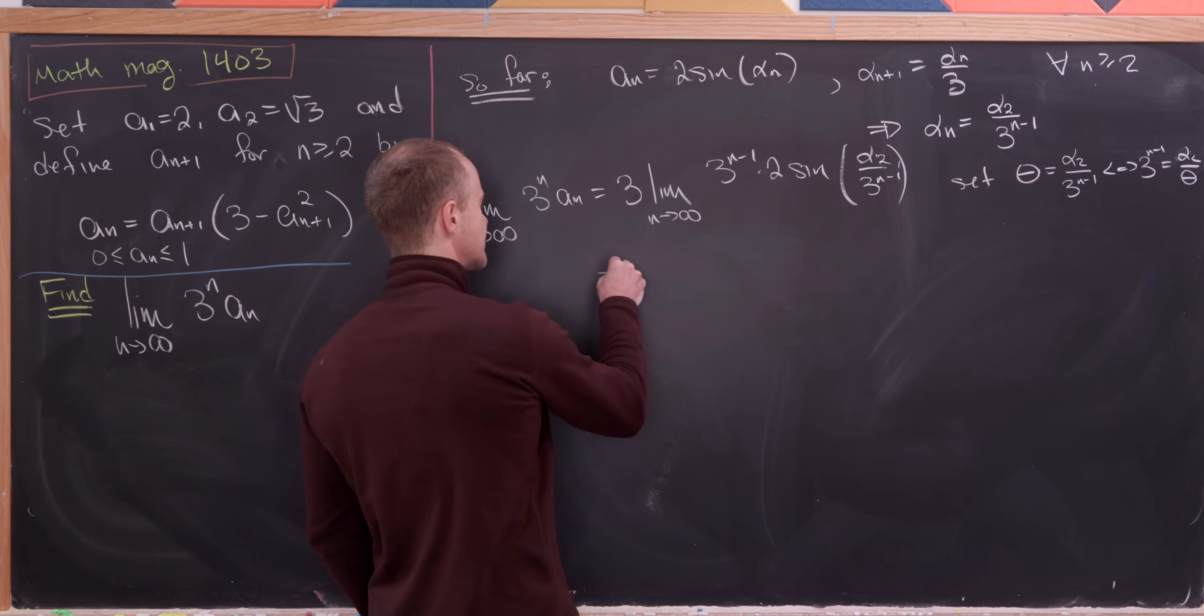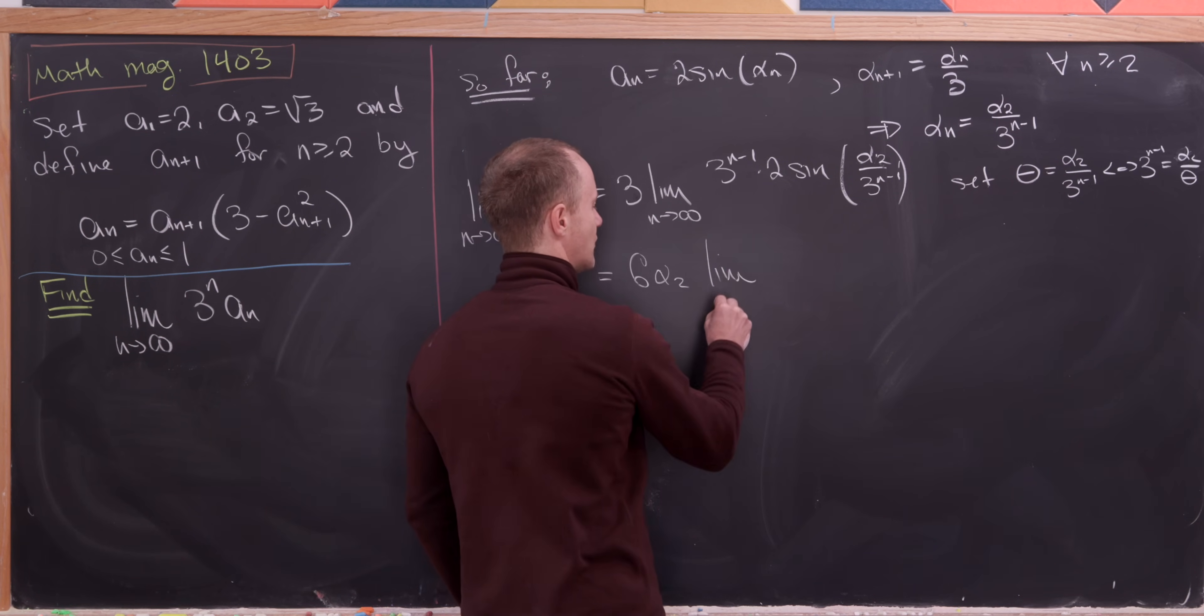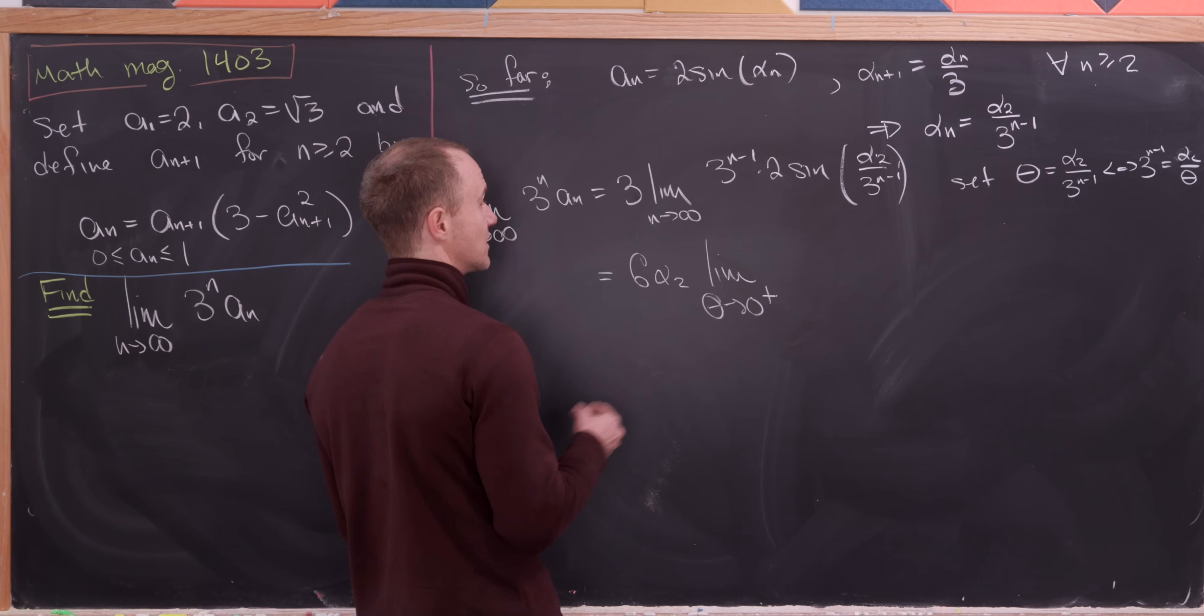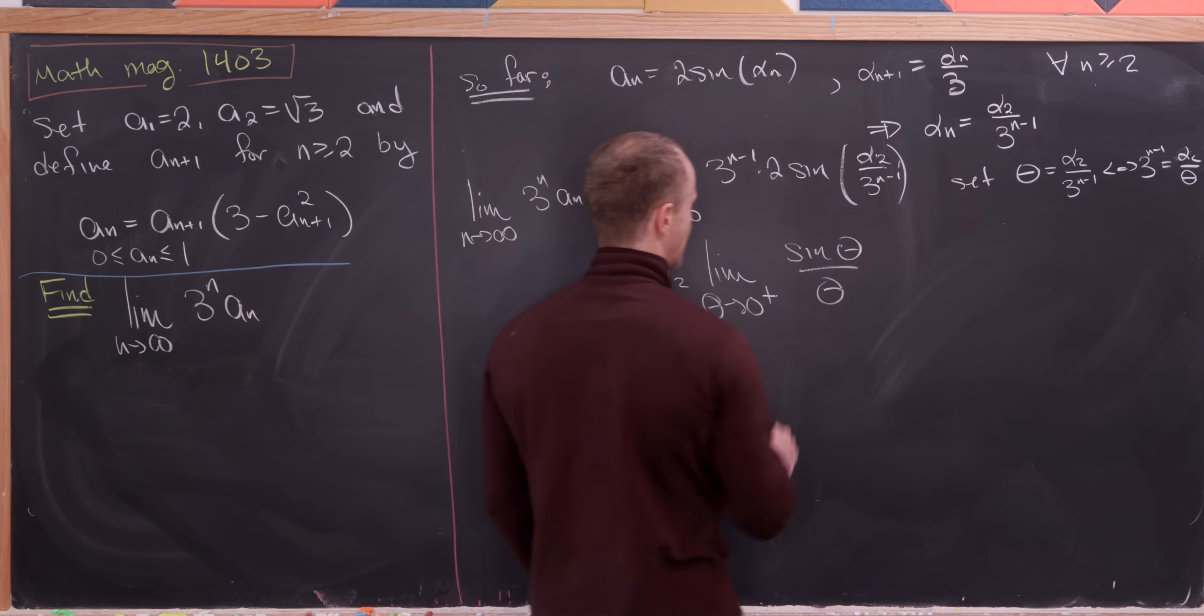But then after factoring some stuff out, this turns into 6 times alpha 2 and then we'll have the limit as theta goes to 0 from above after our change of variables, that's where theta is approaching, and then we have the sine of theta over theta.